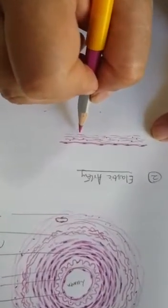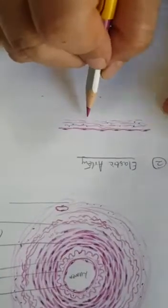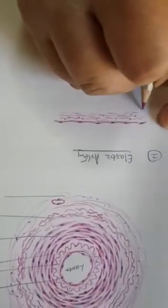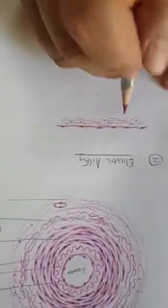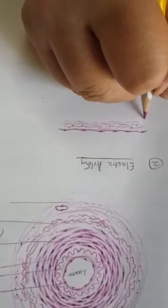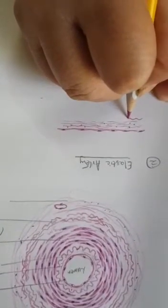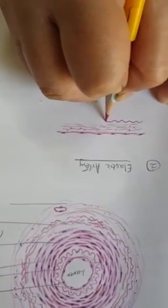So tunica intima comprises of endothelium and subendothelial layer, but internal elastic lamina is not visible here because of many elastic laminae in the tunica media. And you will draw these elastic laminae again in the form of wavy fibers here.